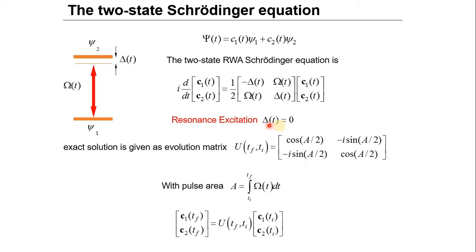The problem here at exact resonance is that if we start from the ground state and want to transfer all population to the excited state, it's done only for a pulse area which is exactly pi. If it's not pi, then some probability to find the state in the ground state remains and it's not a hundred percent probability to be in the excited state. If the pulse area is pi, then it's a hundred percent — everything is excited. So how do we make a technique that is more robust with respect to the pulse area and tolerates deviations from pi?